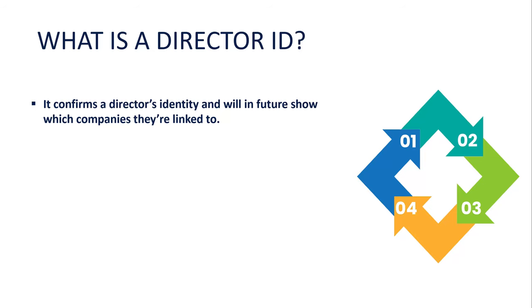So the Director ID - it's brand new. It's been talked about for a little while, but now it's finally become real. What it's all about is pretty much every director needs to have a Director ID. It's basically going to have your identity on it, so ASIC and the tax office and a number of other institutions will be able to use this Director ID to be able to identify you much easier.